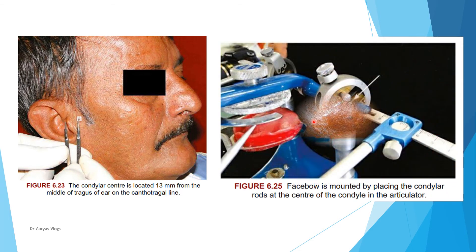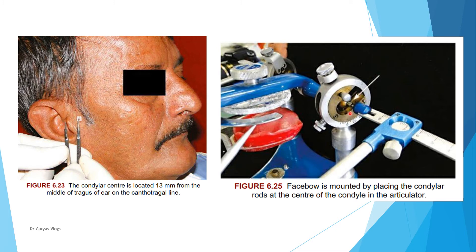The facebow is mounted by placing the condylar rods at the center of the condyle in the articulator. Unlike the earpiece type, the facebow is mounted by placing the condylar rods at the center of the condyle in the articulator. That is the fascia type of facebow.